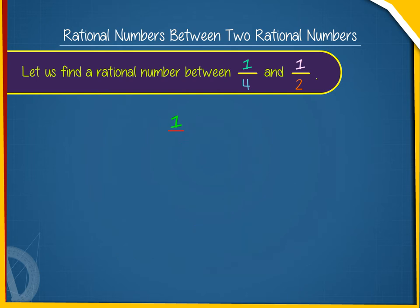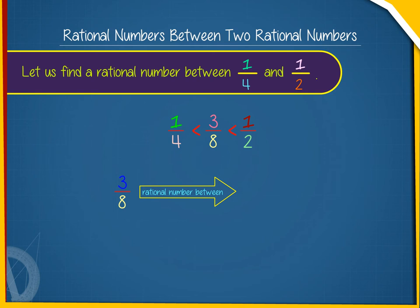Now, one by four less than three by eight less than one by two. Hence, three by eight is a number between one by four and one by two.